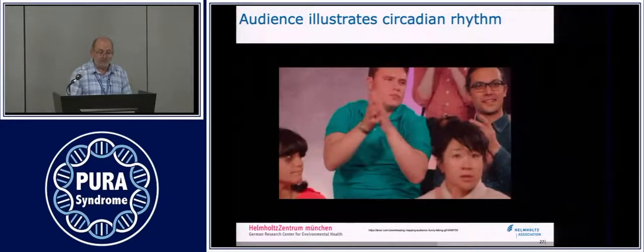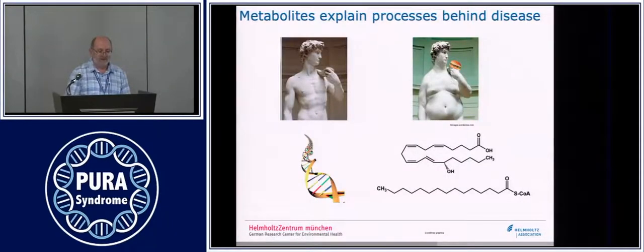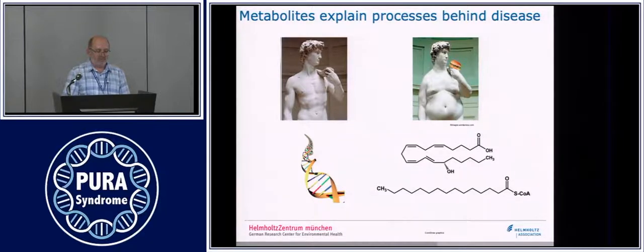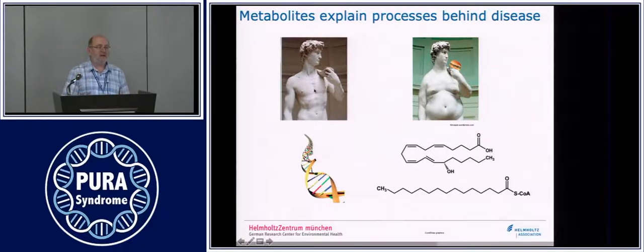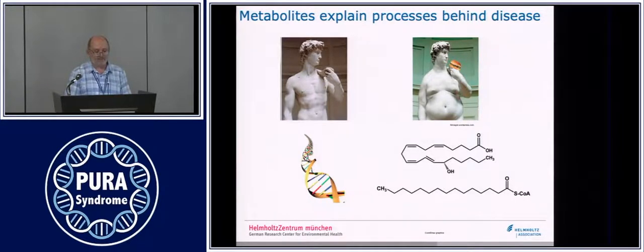What can we learn from these examples? Metabolomics can provide information that genetics cannot. We cannot explain genetically why the type 2 diabetes epidemic is present worldwide — our genomes have not changed. But it could be an epigenetic effect or a microbiome effect. Using metabolites, we can explain the processes that lead to that.